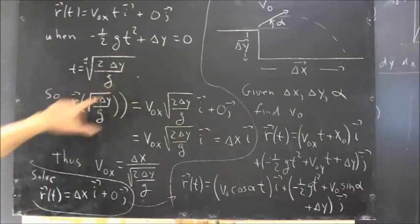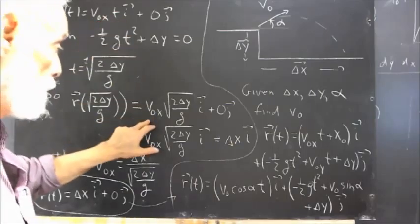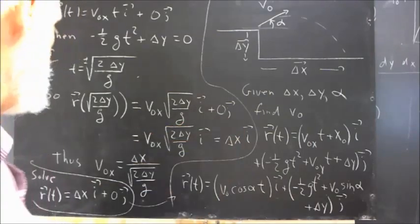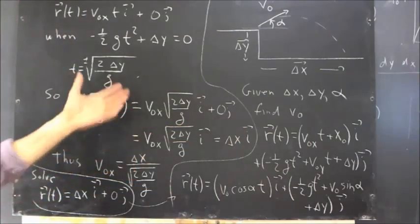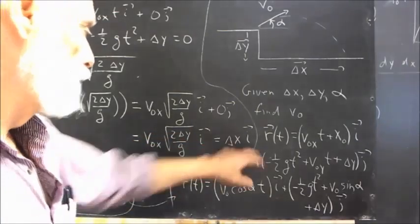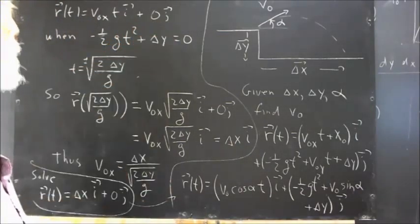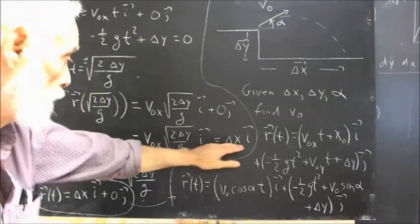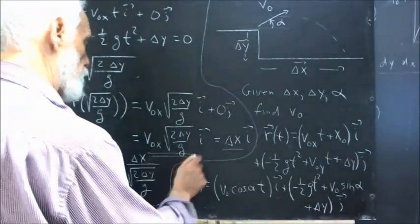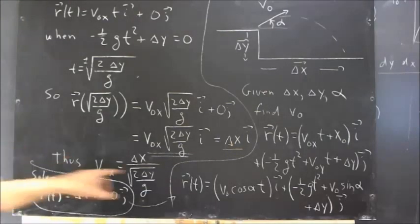Plugging that in for r, we get v0 x t becomes v0 x times this solution for t times i plus 0 j. And that's going to be just v0 x times this times i. And that's got to equal delta x times i because the condition is, again, when the j component is 0, this is 0. This all leads to this and tells us that delta x is going to equal v0 x times the square root of 2 delta y over g. And that's what I've written here.